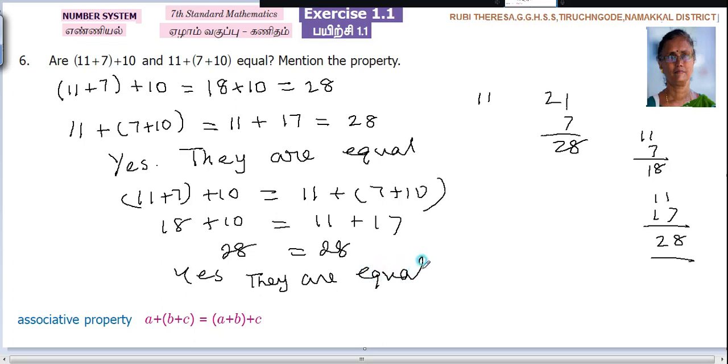Just instead of doing separately, you can do it like this: 18 plus 10 equal to 11 plus 17, 28 equal to 28. Yes, they are equal. Either this or this. Write 28 equal to 28, yes they are equal. Mention the property. What property they have used?